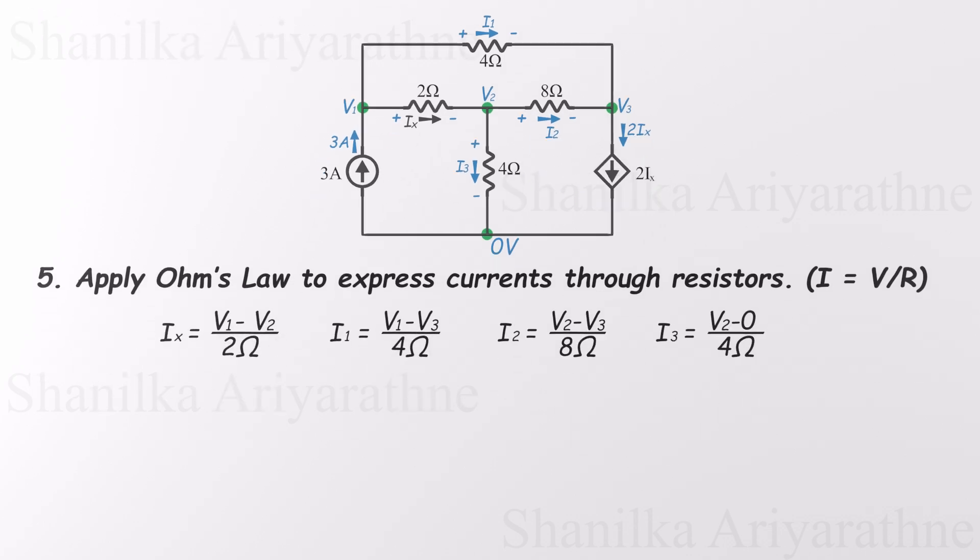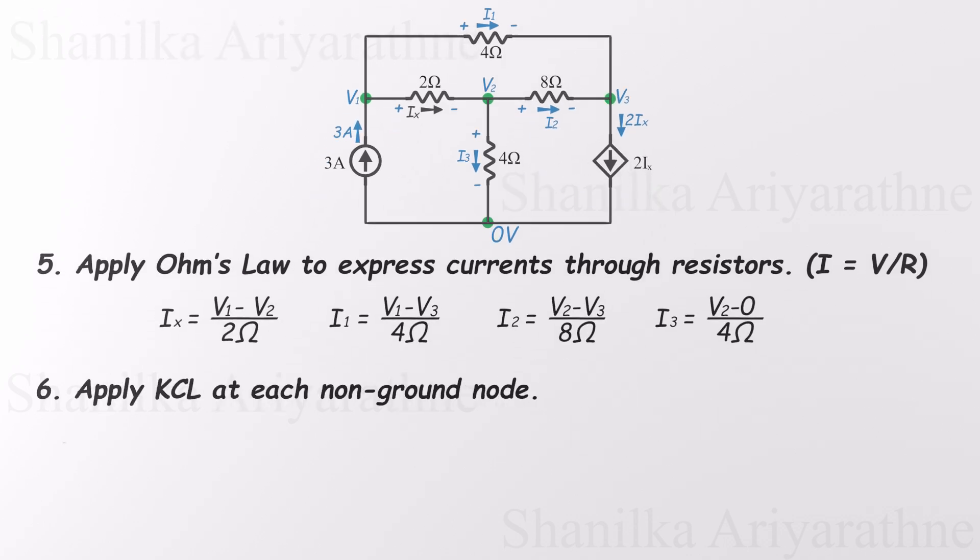Now it's time to apply Kirchhoff's Current Law, or KCL, to each node in the circuit. At the first node, we see that 3 amps flow in, while I1 and IX flow out. So the equation is 3 equals I1 plus IX.